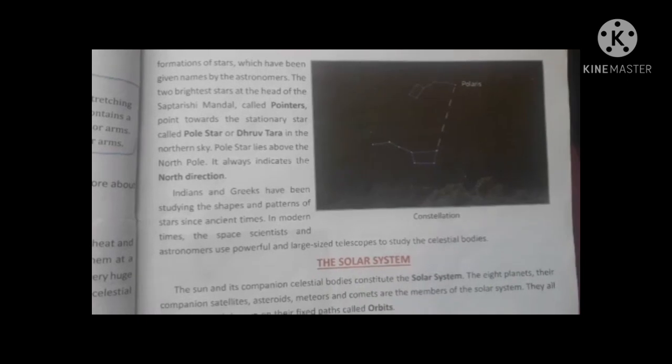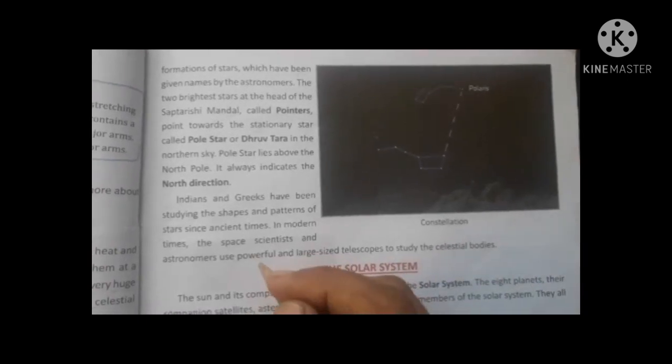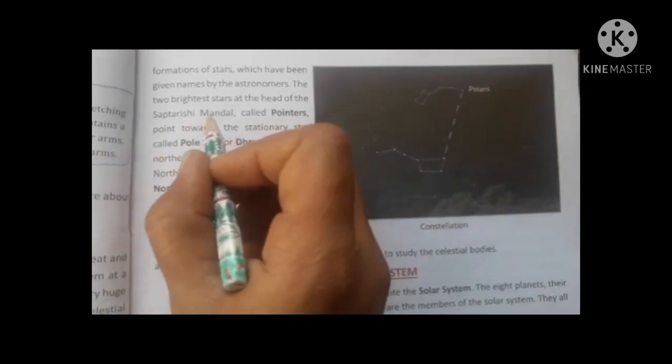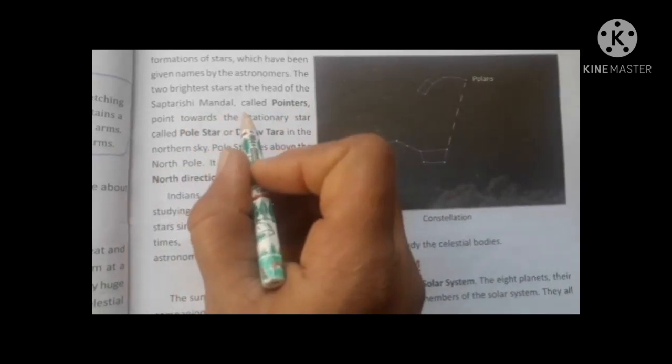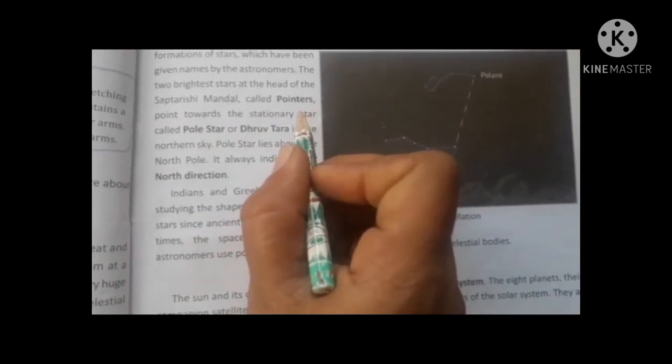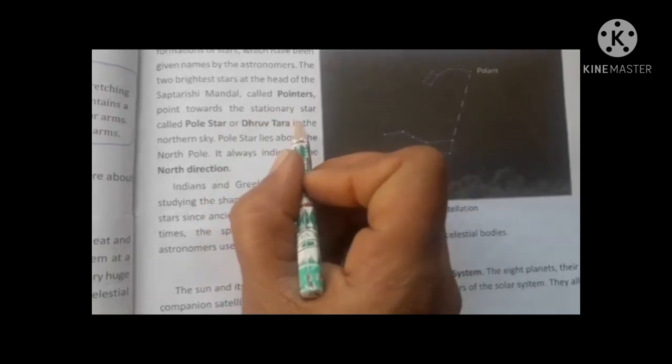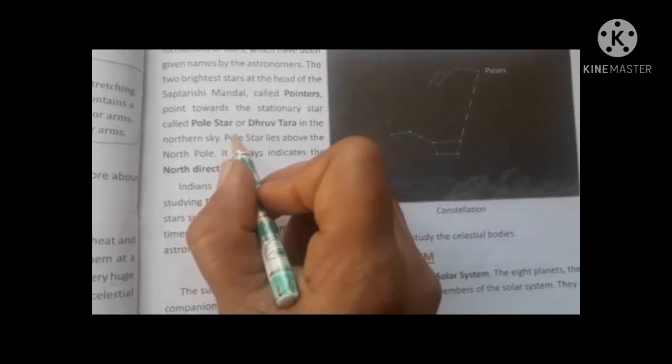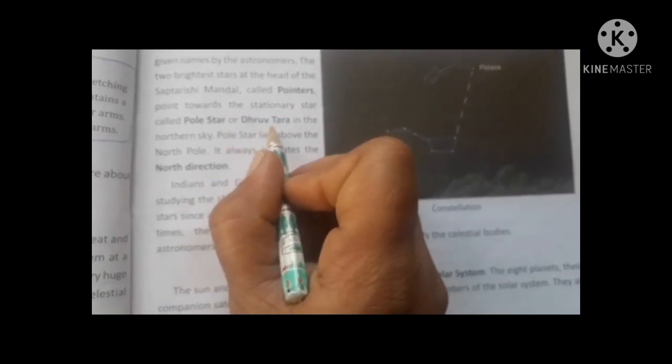These names are based on what scientists gave them. Two bright stars at the head of the Saptarishi Mandala are called pointers. These two stars point toward the stationary star called Pole Star or Dhruv Tara.